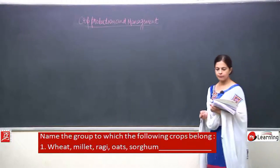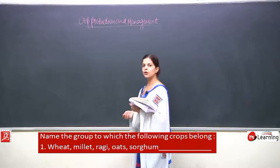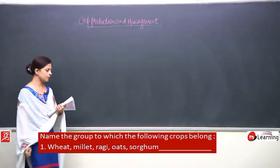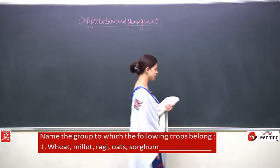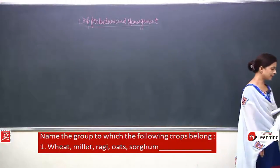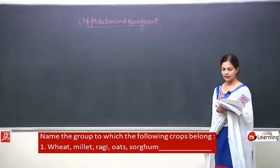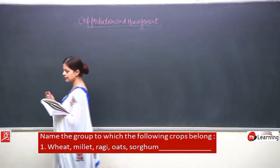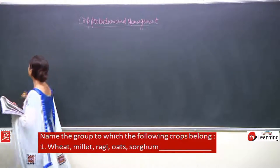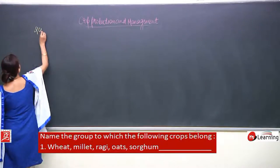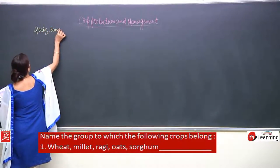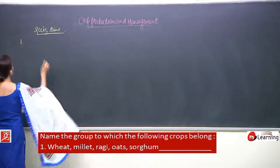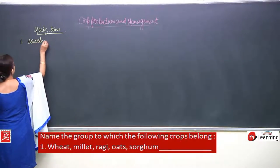First question: name the groups to which the following crops belong. The first group includes wheat, millet, ragi, and oats. You all know these are cereals.